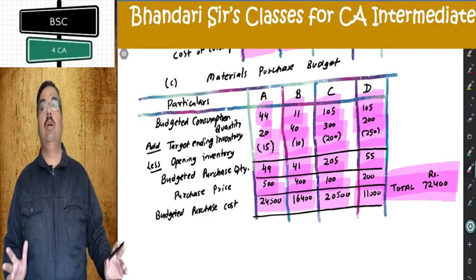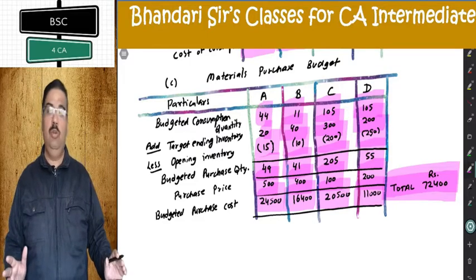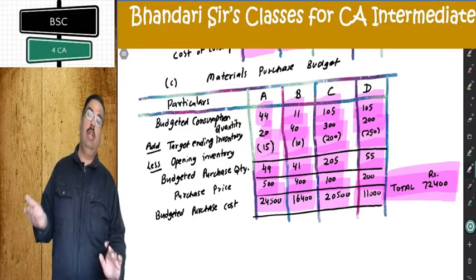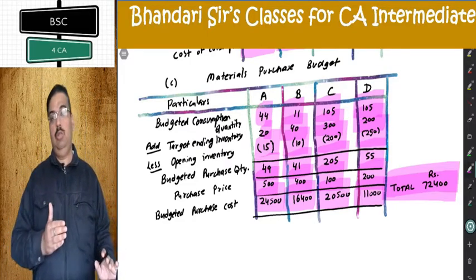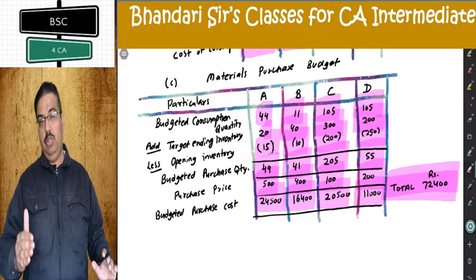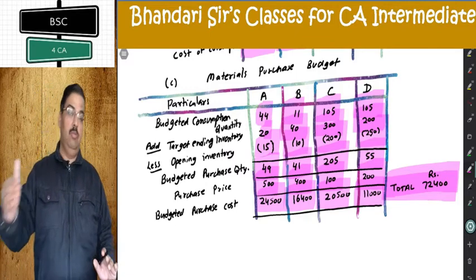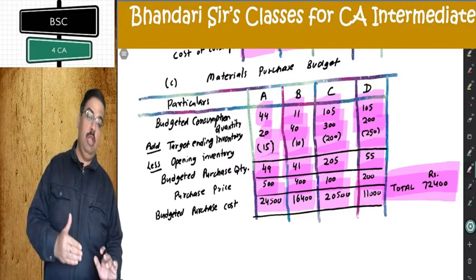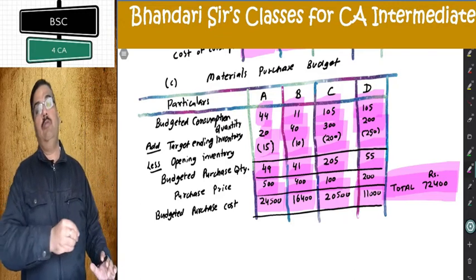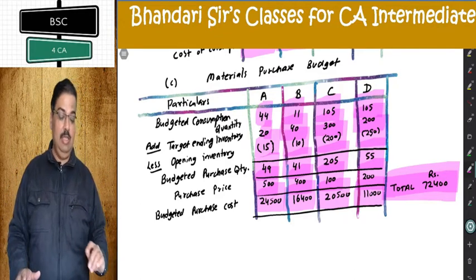No income statement — nothing else. Very simple, easy question. We started from sale and reached production; from production we reached consumption; from consumption we reached purchase. Multiply with purchase price and we get the purchase amount. That is C part.